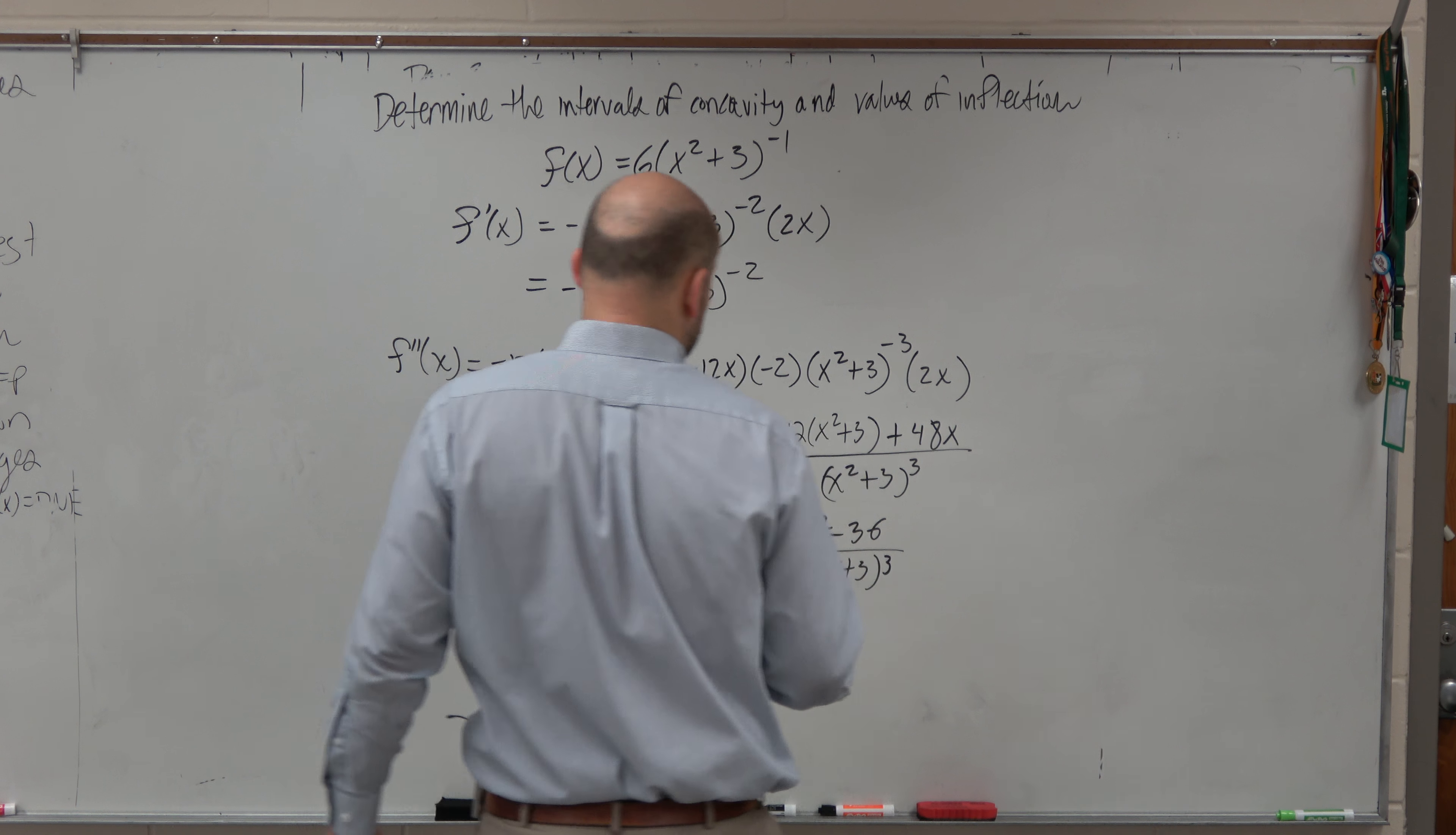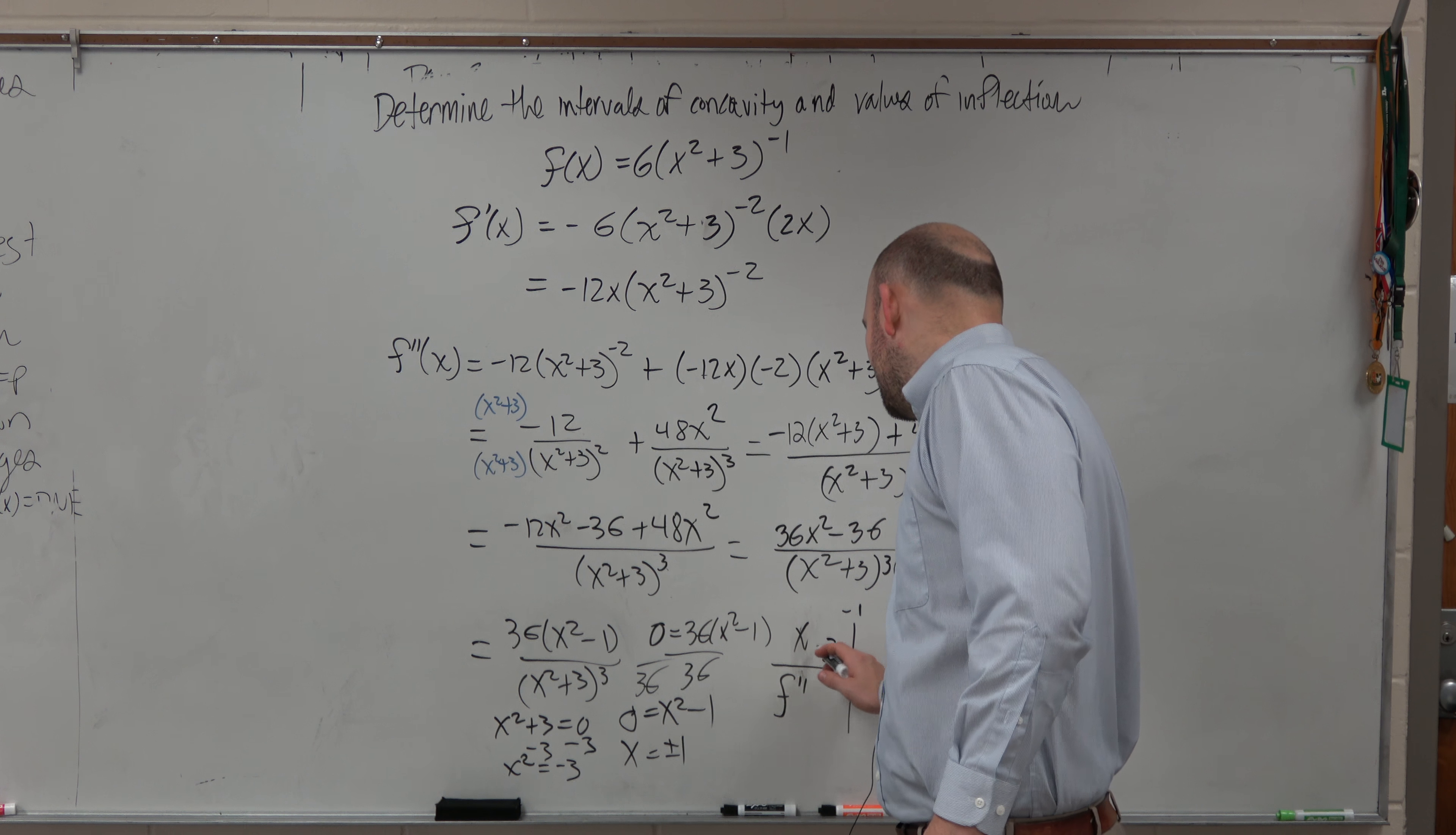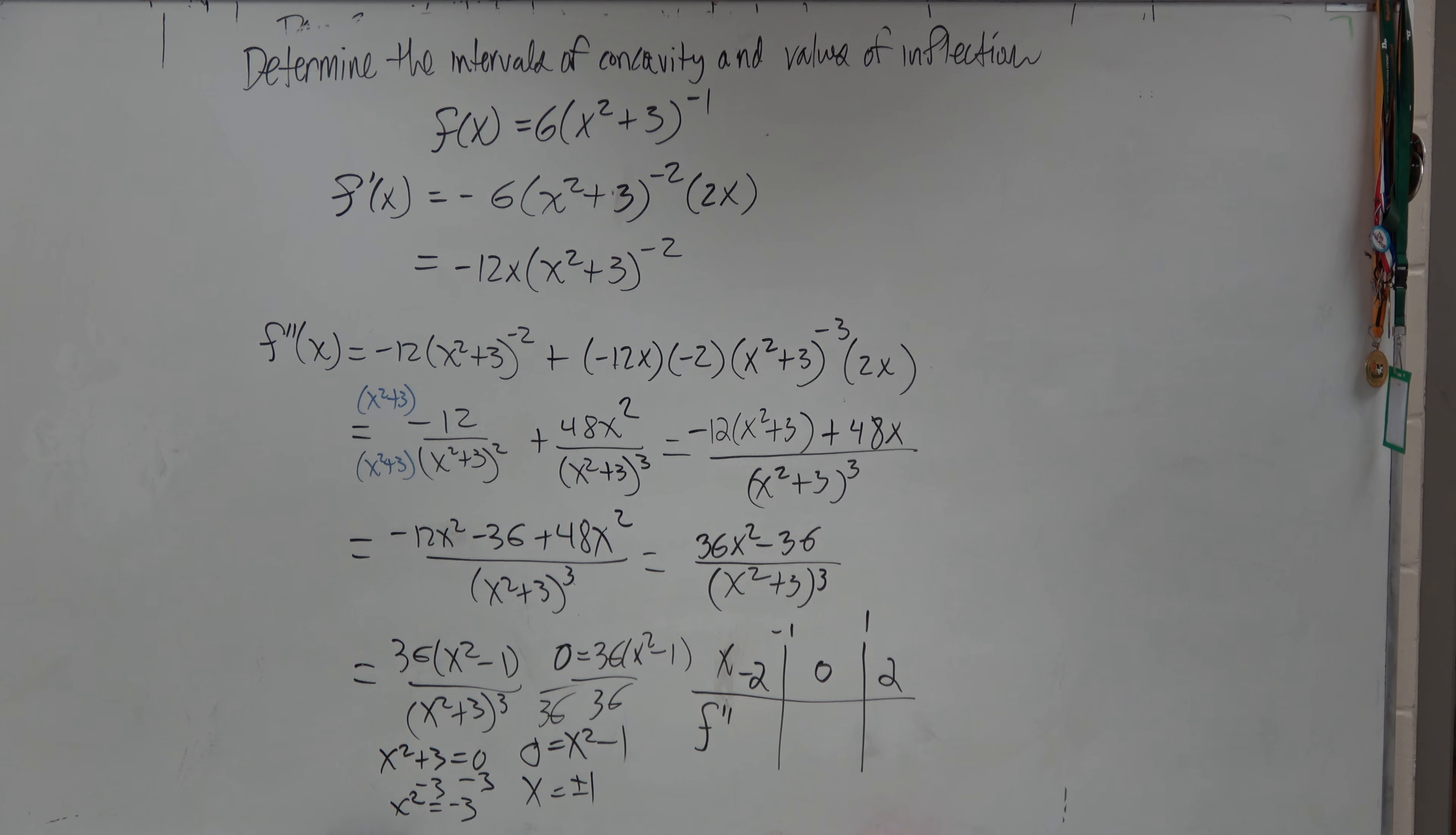So let's go ahead and set up our table. So we'll have x and f double prime, and we're going to check negative 1 and 1. So a point to the left of negative 1, I would say it would be negative 2. Between negative 1 and 1, I would say 0. And beyond 1, I would say 2. Now, when we're testing these, we're going to plug them in.